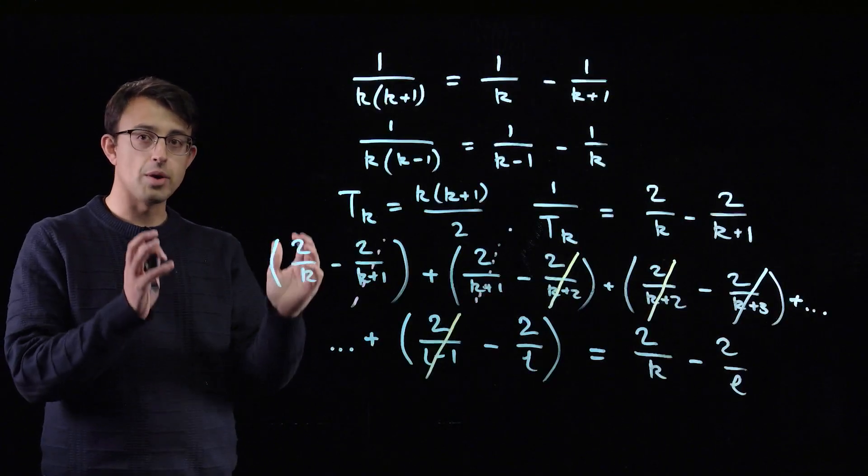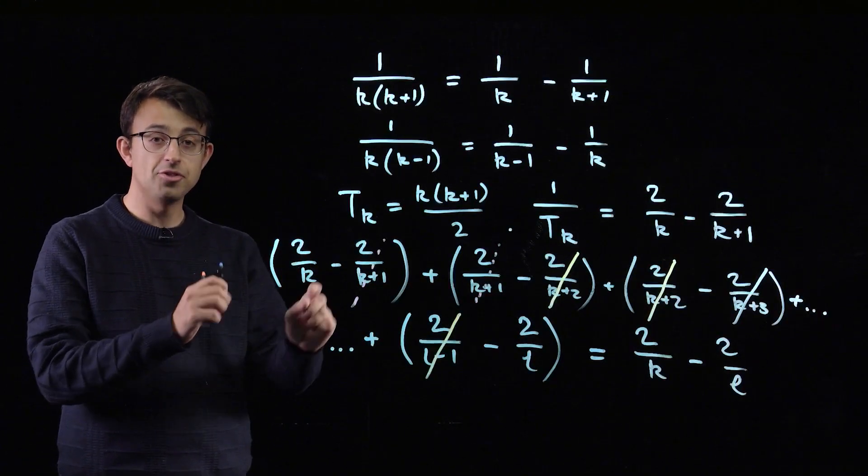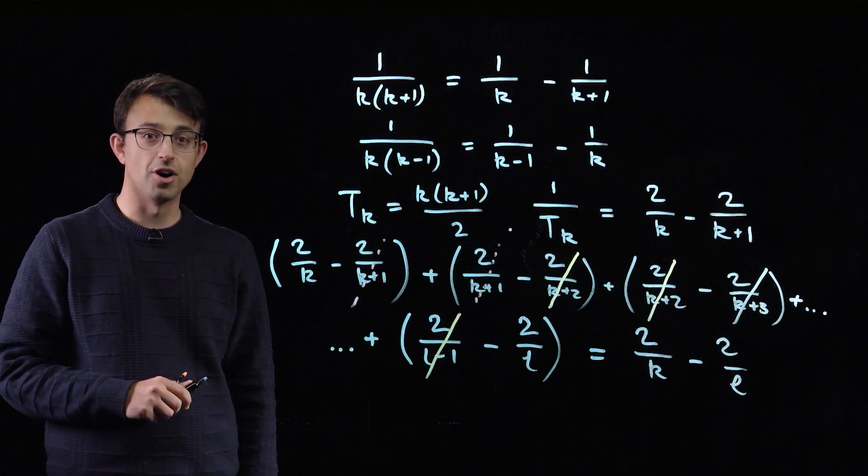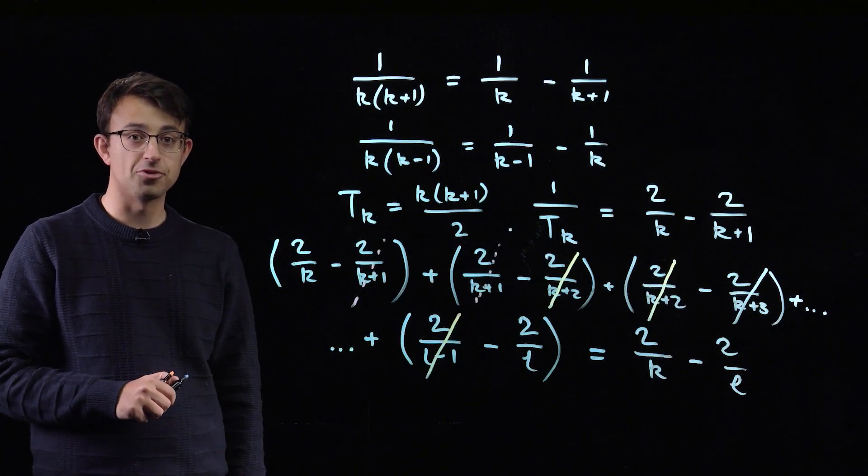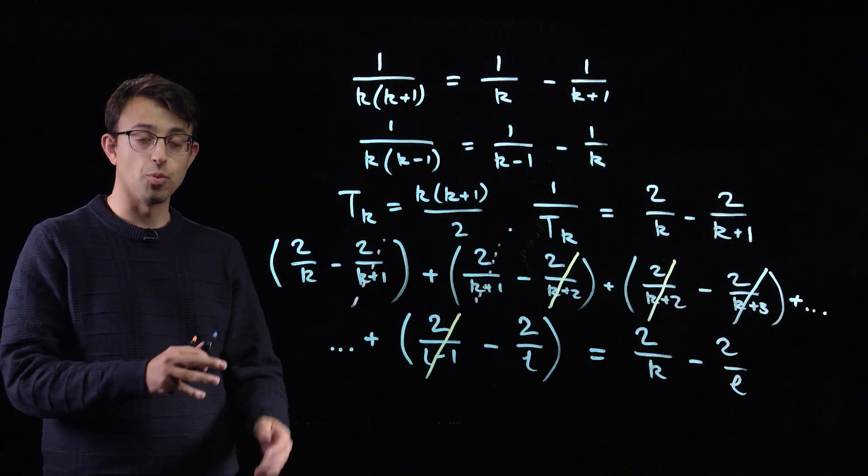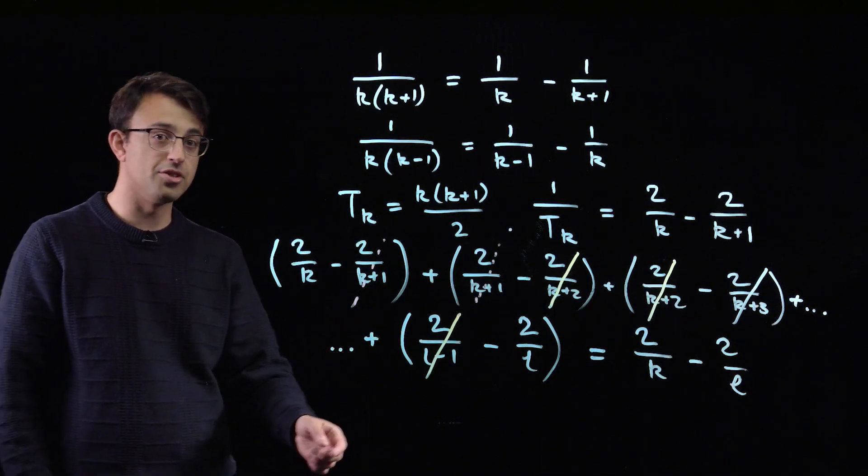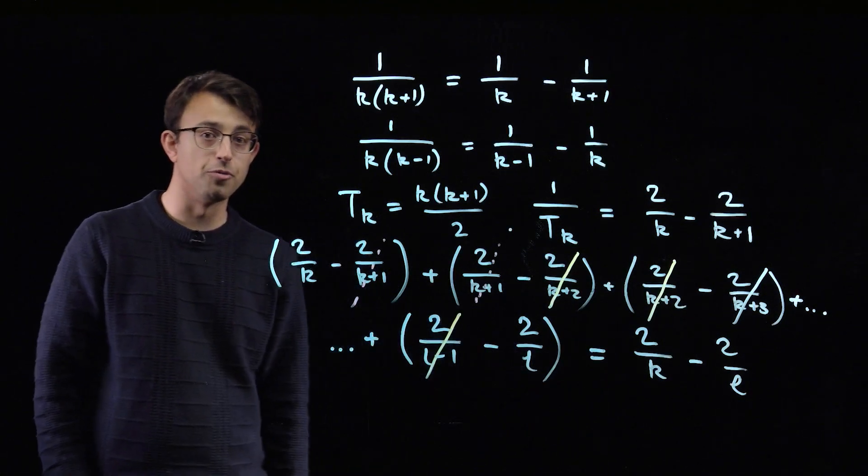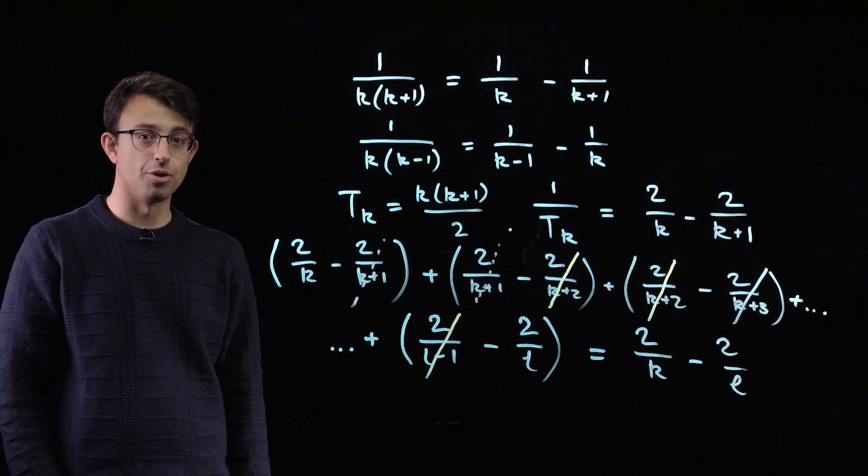Now this kind of sum, where you have lots of terms and there's cancellation between consecutive terms, it's called a telescoping sum and it comes up in lots of contexts in mathematics as a way to write something relatively complicated in an eventual quite simple form. And we'll use this to finish the problem.